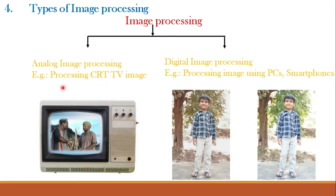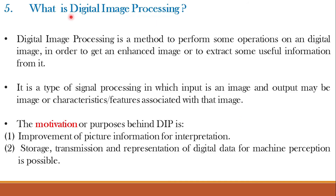An example of analog image processing is processing CRT TV images. In CRT TVs, there were different knobs for controlling contrast or brightness — that processing was analog in nature. An example of digital image processing is when you take a picture that is a little faded or unclear and process it using a PC or smartphone to obtain a better image. Such processing is known as digital image processing.